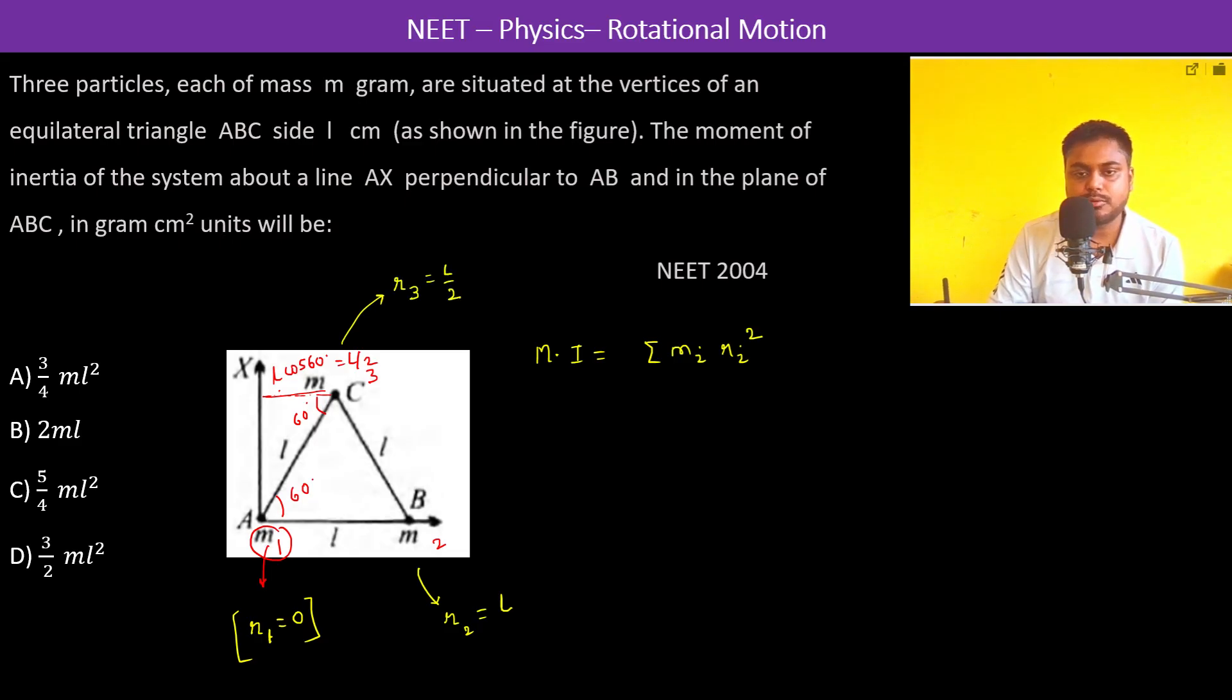So moment of inertia will be: for first mass is 0, second mass is m l squared, for the third mass it's m times l by 2 whole squared. So this is ml squared plus ml squared by 4, which is 5 by 4 ml squared. Therefore the answer is going to be C.